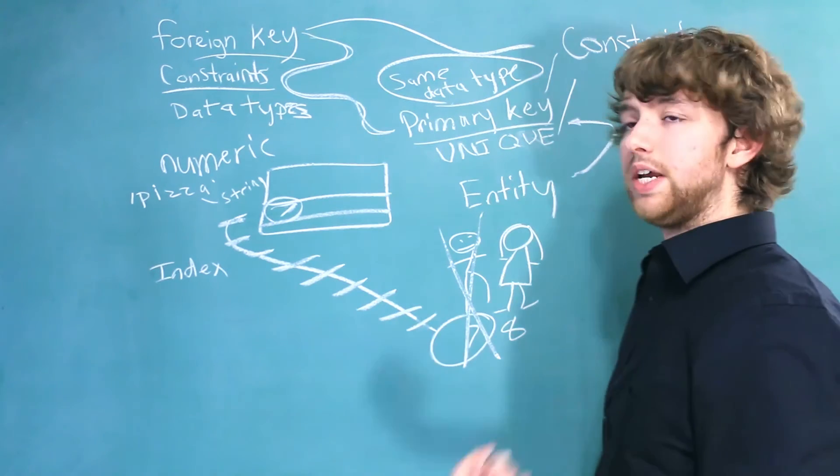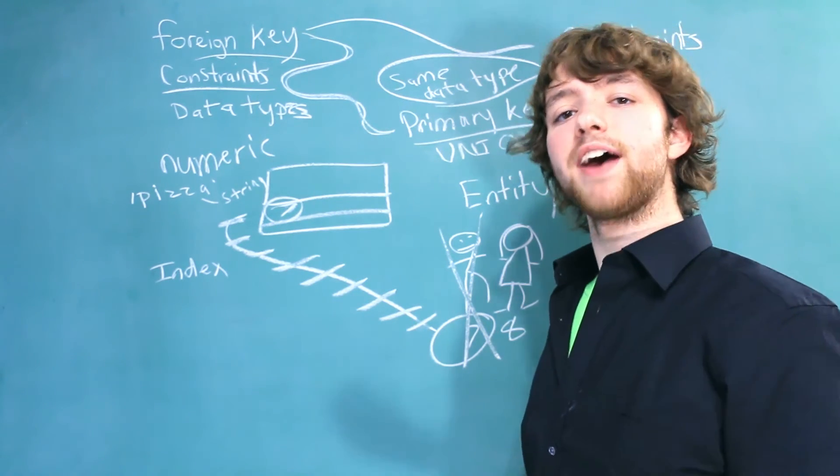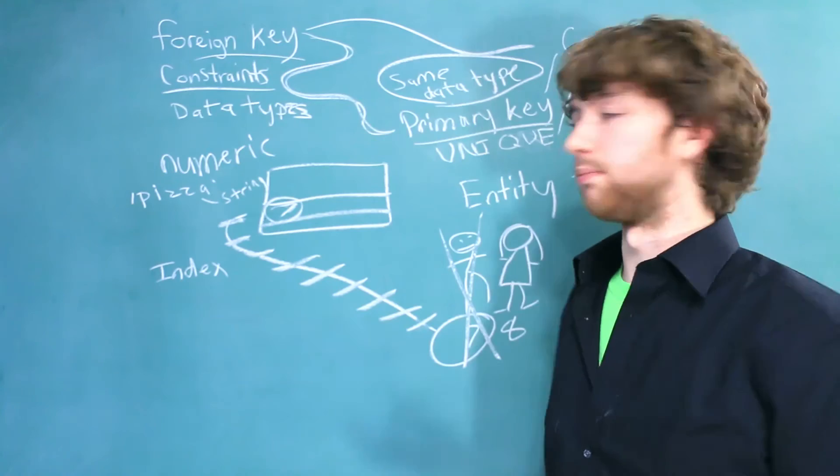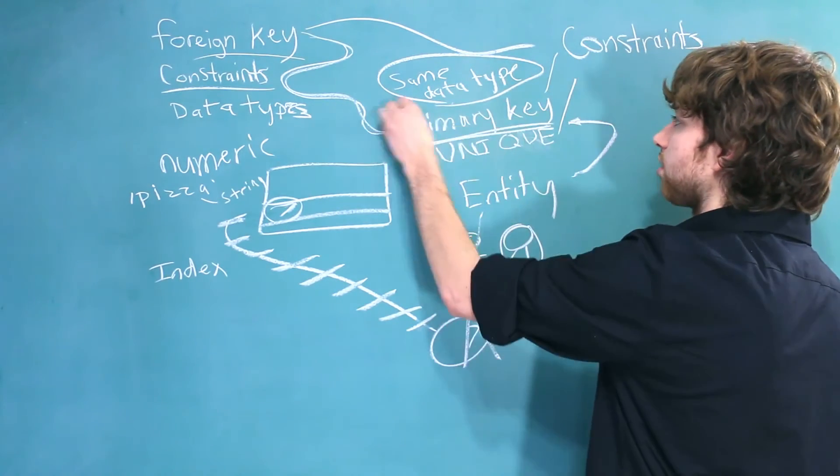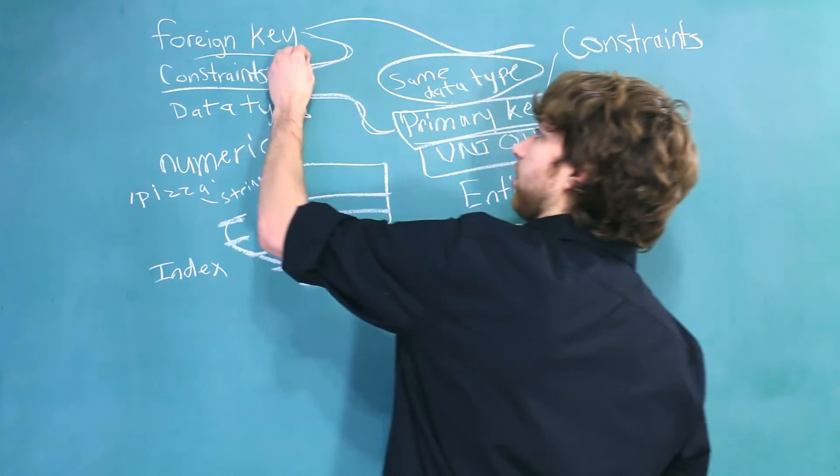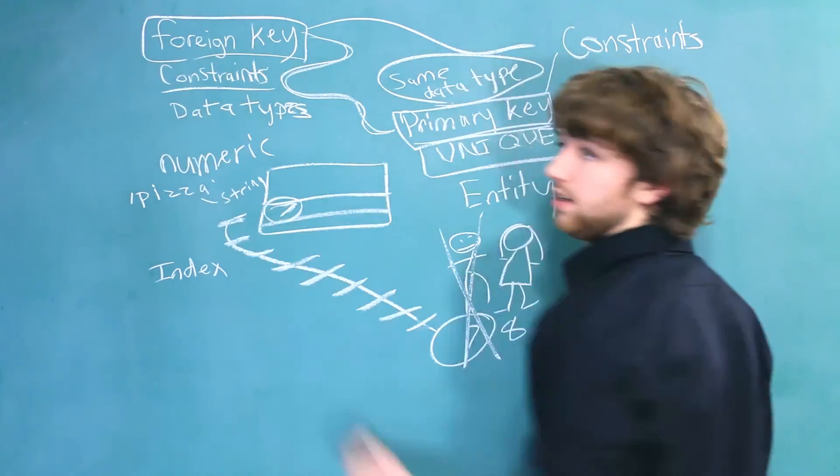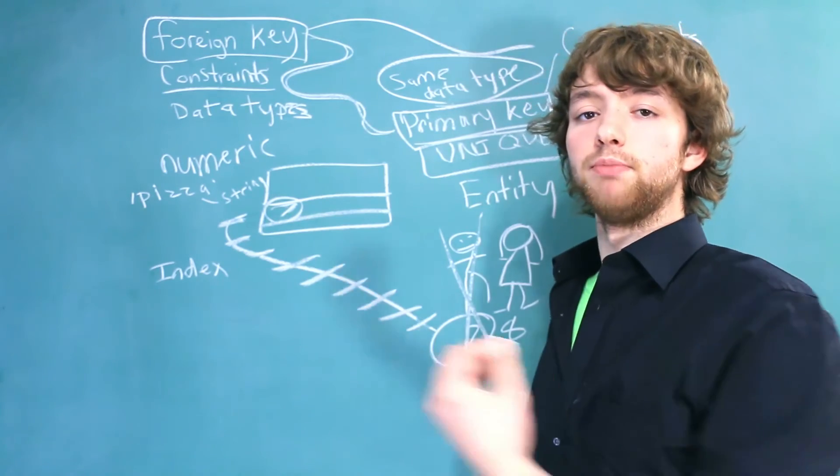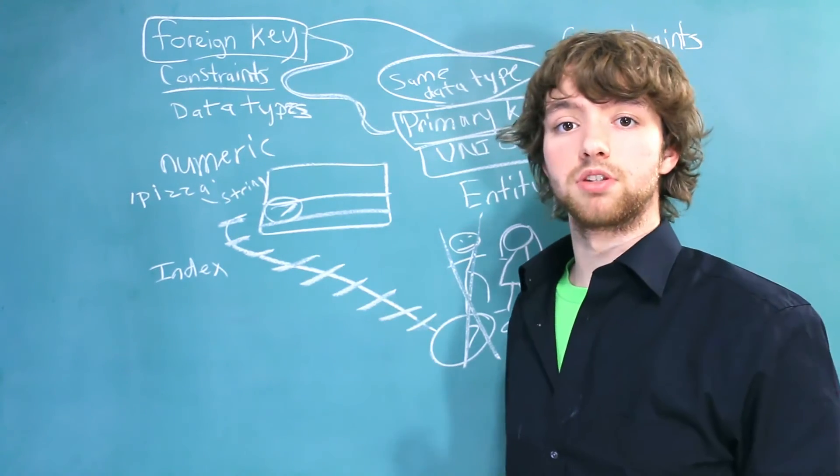You can tell the database to index important columns, and in fact, it's going to index certain columns automatically. Primary keys are automatically indexed. Unique columns are automatically indexed. Foreign keys, on the other hand, are not automatically indexed, but often times you will want to manually index them because we use them so much.